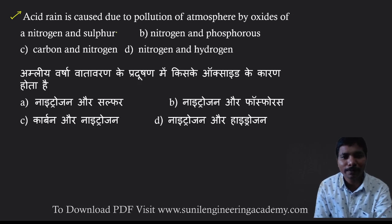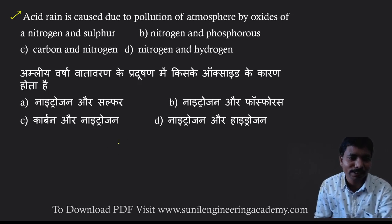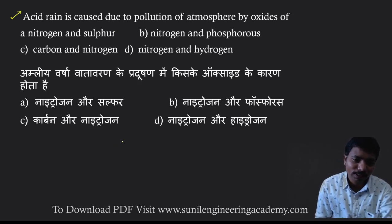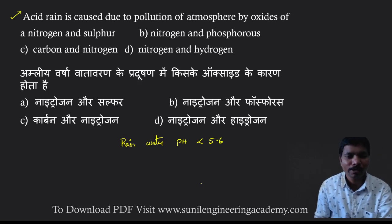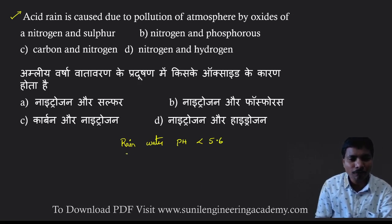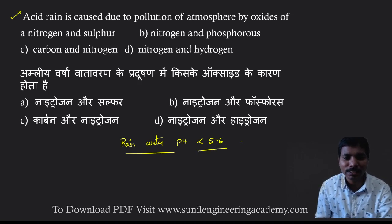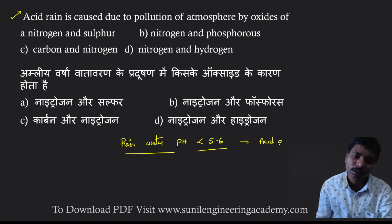Acid rain is caused due to pollution of the atmosphere by oxides of nitrogen and sulfur. First of all, what is acid rain? Acid rain is nothing but when rain water pH is less than 5.6 — then we can say that the rain is acidic. Why is the pH going to be reduced?